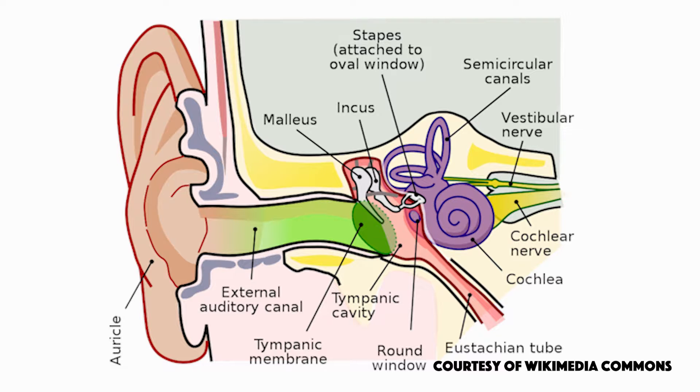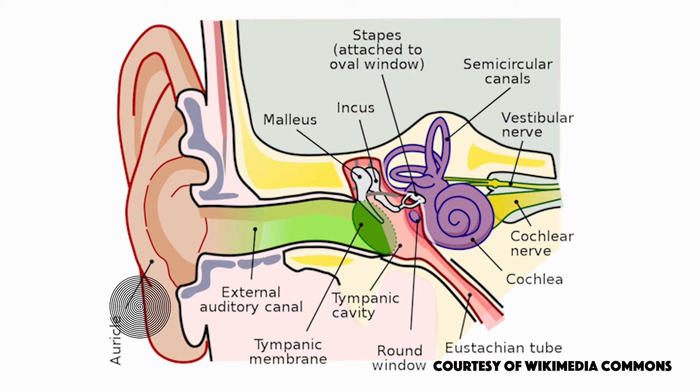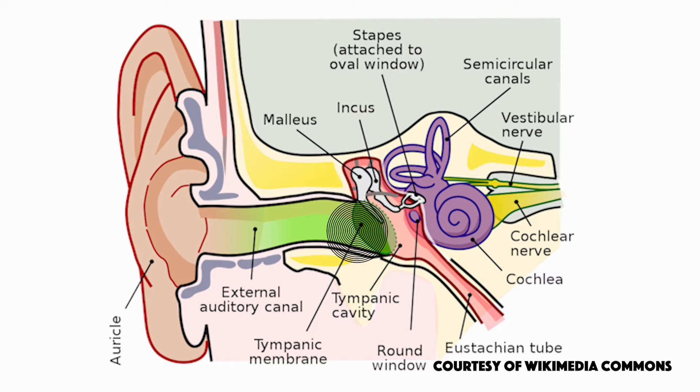These sound waves that are created first hit your pinna. The pinna is part of your outer ear and it's made of rigid cartilage covered by skin. After hitting the pinna, the sound waves are then funneled into an external auditory canal — a short, tube-like structure that ends at the eardrum, also known as the tympanic membrane.